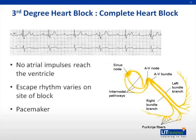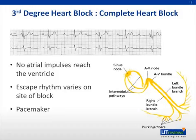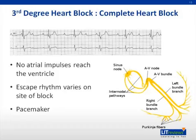In complete heart block, the signal from the SA node never reaches the ventricles. This can happen at any point from the AV node and below. On the EKG, the P waves march along at a rate that does not correlate with the QRS complexes. In this example, the P waves are at approximately 100 beats per minute, while the QRS complexes are regular at approximately 40 beats per minute, with no relation to one another. Remember that all cells in the myocardium can depolarize and act as pacemakers.